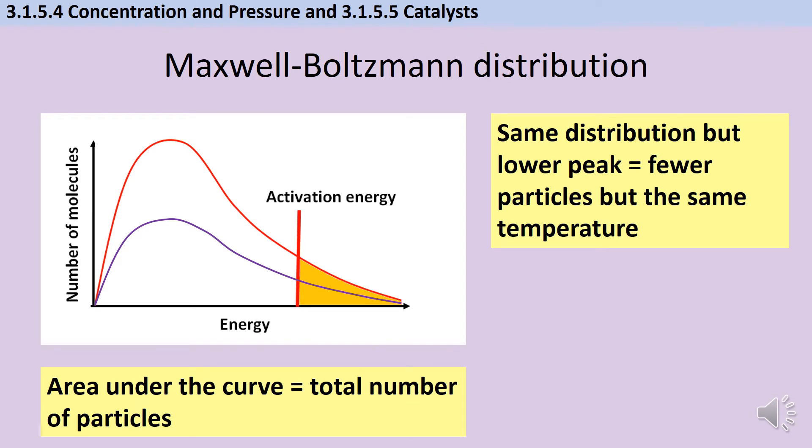You could also be asked to link concentration or pressure to Maxwell-Boltzmann distributions. As we know, if the temperature is constant, the overall shape of the graph is not going to change, so the position of the most probable energy, so the peak of the graph, will stay in the same place.